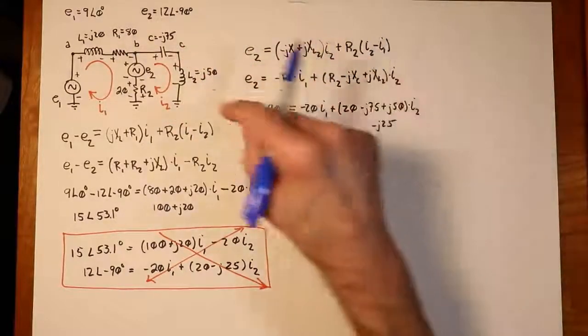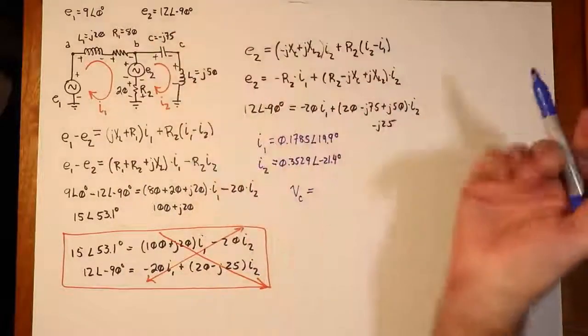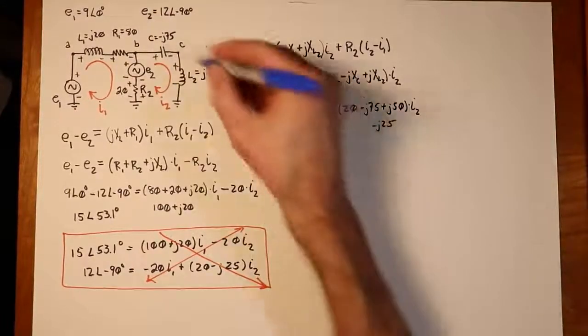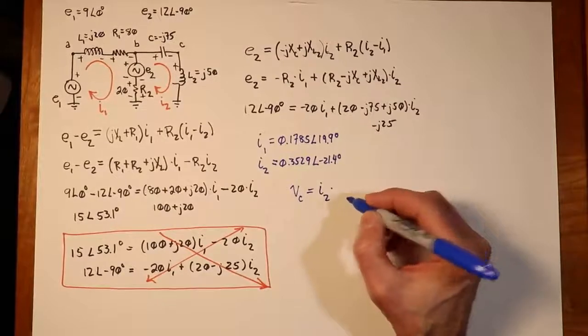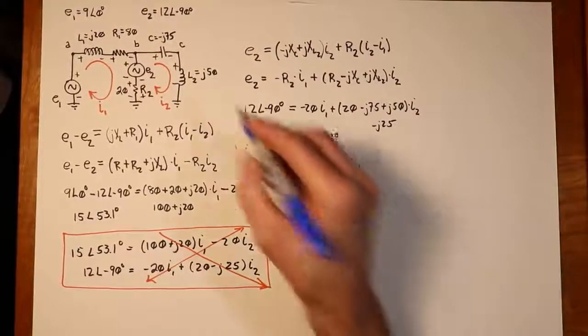So we could write a little formula for that. What's the current through it? Well, the only current through the inductor, inductor number two, is I2. So that's just I2. And that's going to be multiplied by the inductive reactance, X sub L number two, which happens to be the J50.